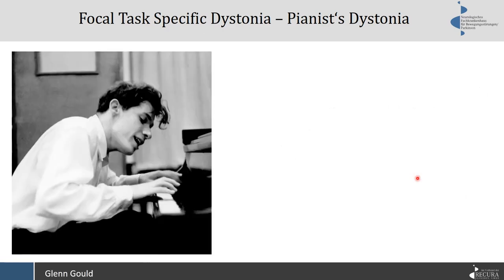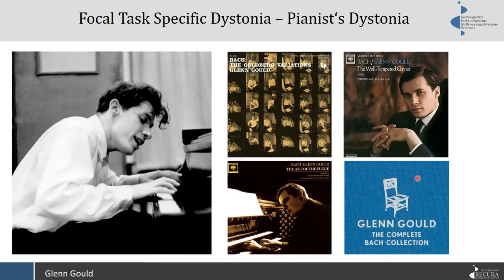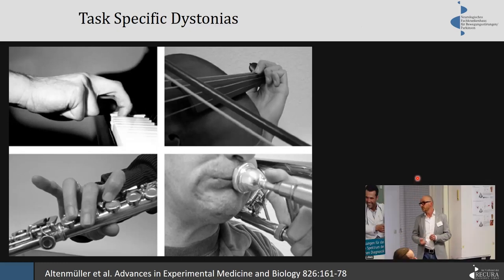Other people are less fortunate. Glenn Gould is a very famous musician who played a lot of Bach. Bach didn't care about Glenn Gould's focal dystonia, so Gould was stuck with whatever was dystonic and couldn't circumvent it at all. This task-specific dystonia is very prevalent in musicians, and there's a whole variety of other phenotypical presentations.